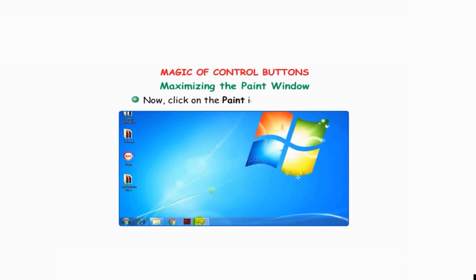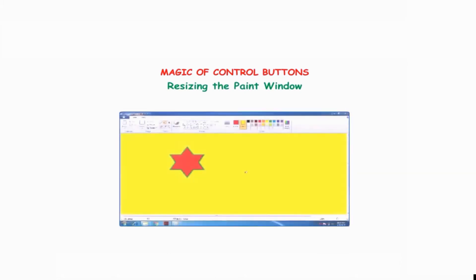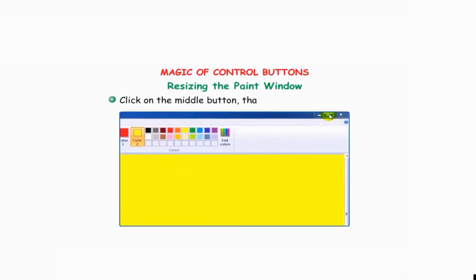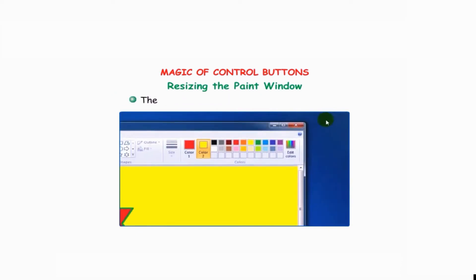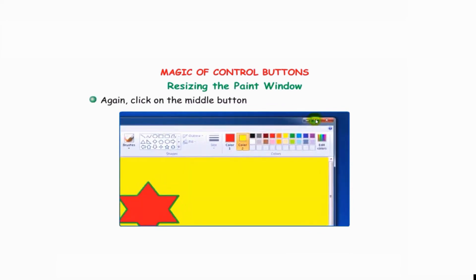Maximizing the Paint window: click on the Paint icon on the taskbar and the Paint window covers the entire desktop screen. The Paint window will become smaller in size when you click the restore button. Again click on the middle button — the maximize button — and the Paint window will get back to its normal size.